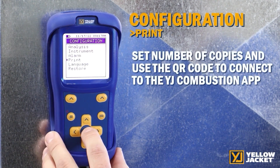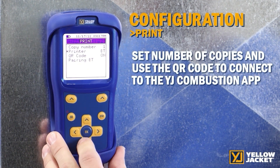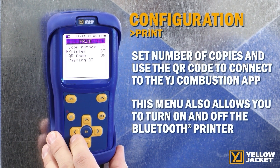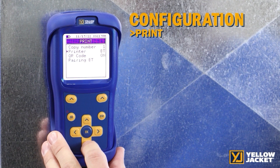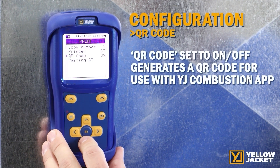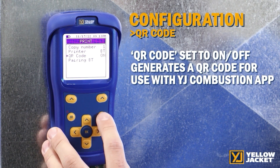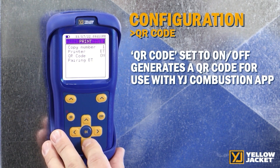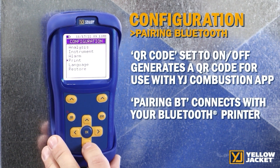The print menu allows the user to set the number of copies to print on the Bluetooth printer. It also allows you to turn on and off the Bluetooth printing. The printer on-off is not available if you do not have it connected. The QR code on-off is to generate a QR code for use with the YJ Combustion app. The pairing option is used to connect with your Bluetooth printer.